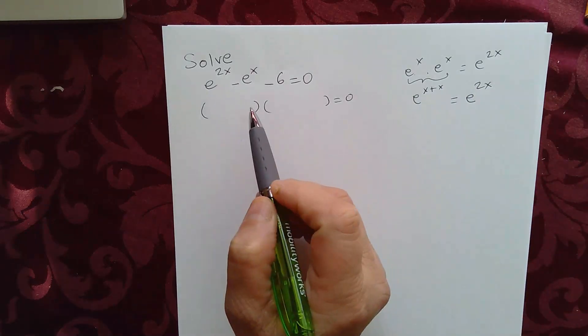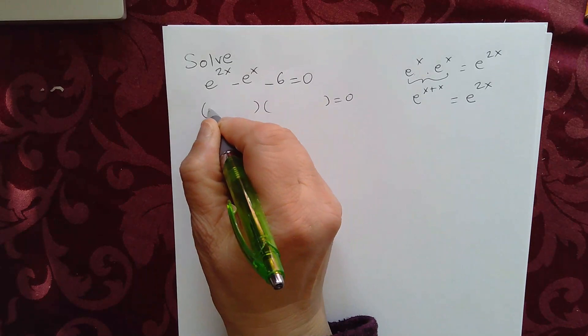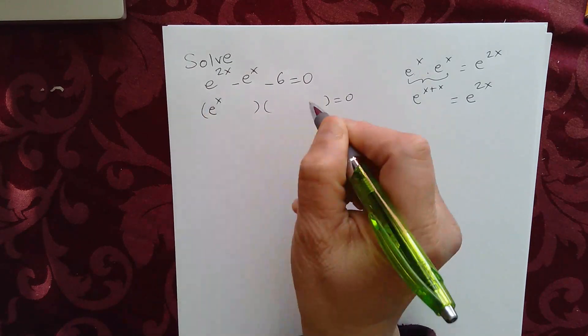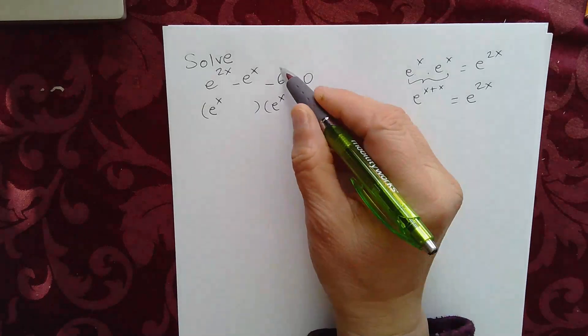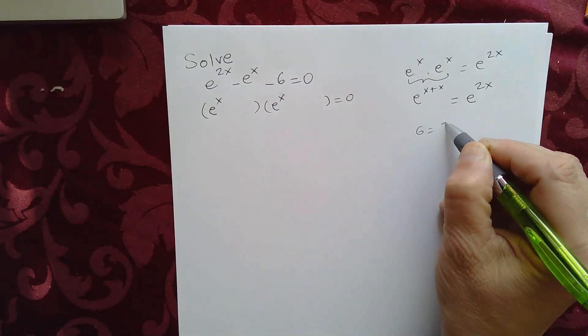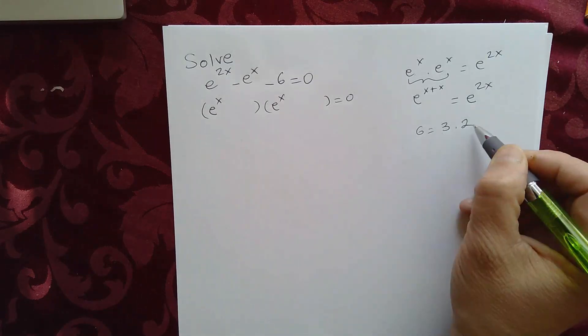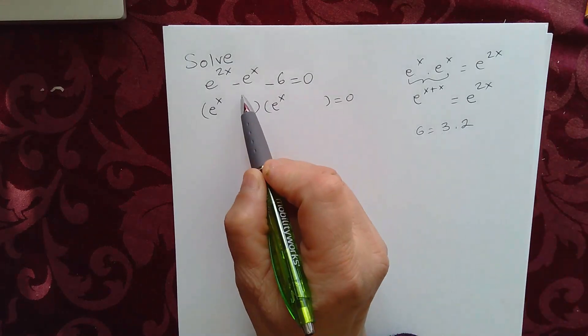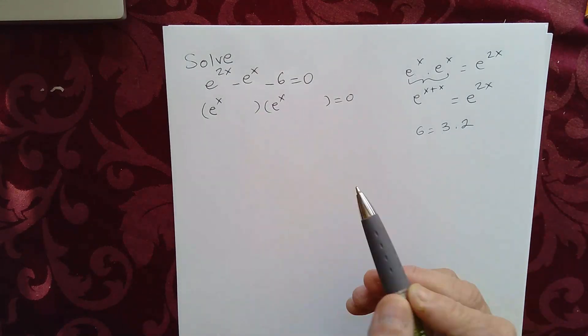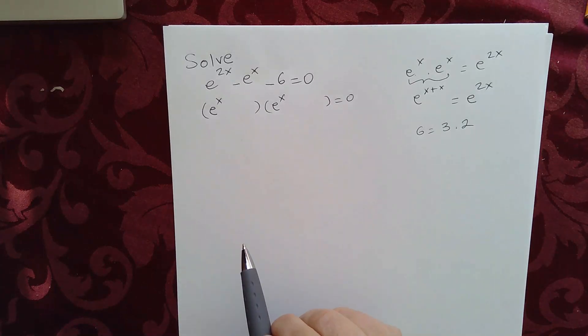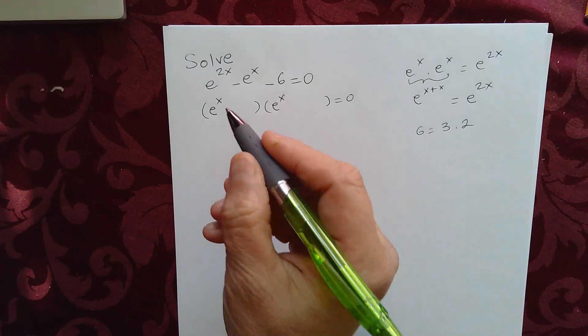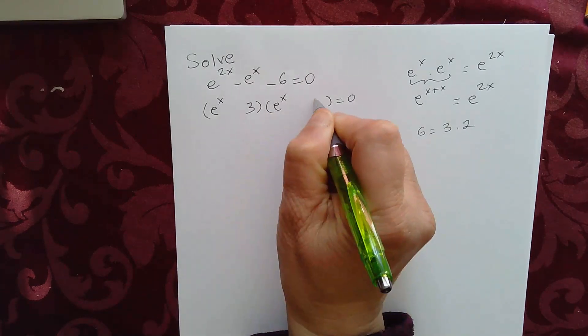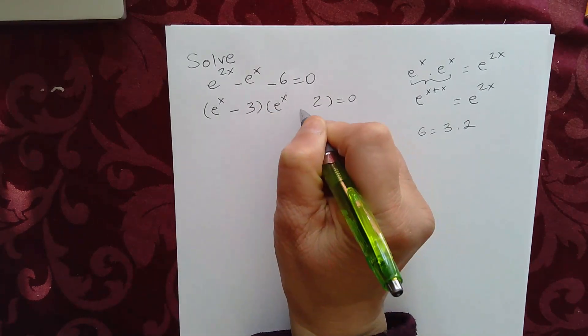So to factor this, e to the 2x, that means that you have to have e to the x here and e to the x here. And here we have 6. So remember, 6 is 3 times 2, and the difference is 1. That's what we have here. Well, the difference is negative 1, which means one of them must be negative. Since the middle term is negative, the larger value would have to be negative. So you have negative 3 plus 2.